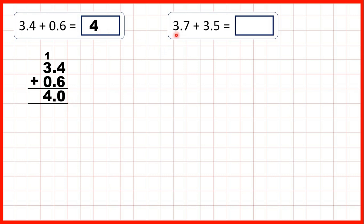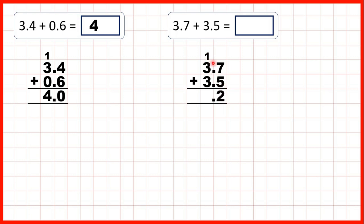Finally we have 3.7 plus 3.5, so we set it out as a column addition, copy the decimal point down into our answer line, and now 7 plus 5 is 12, so 1 and 2, and 1 plus 3 plus 3 is 7, so our answer is 7.2.